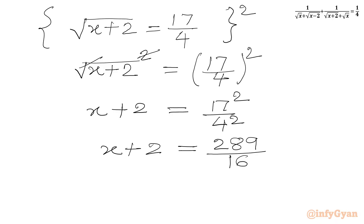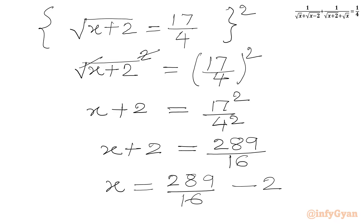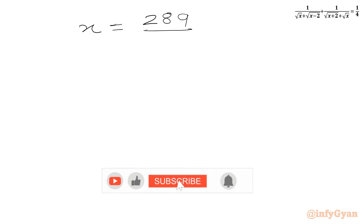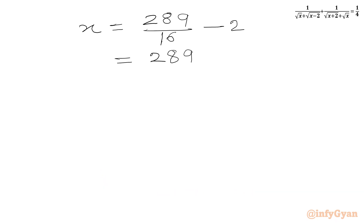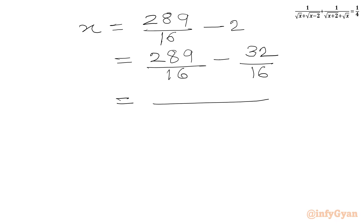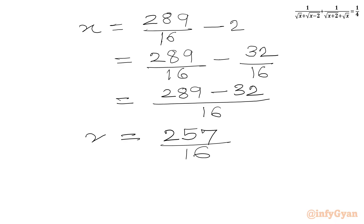Now we subtract 2 from both sides. We get x equals 289 over 16 minus 2, which equals 289 over 16 minus 32 over 16, giving a common denominator of 16. In the numerator we have 289 minus 32, which equals 257. So x equals 257 over 16. And this is our answer.